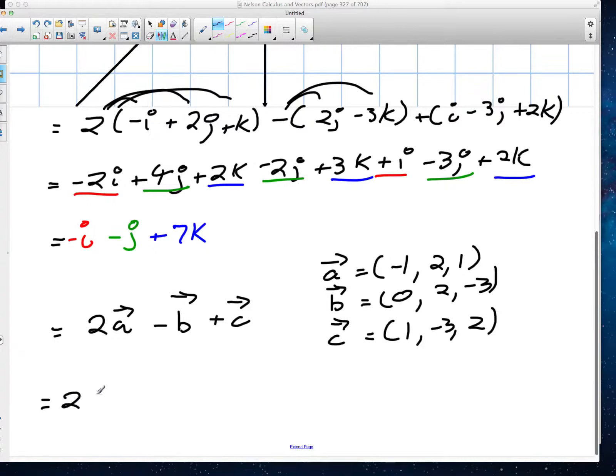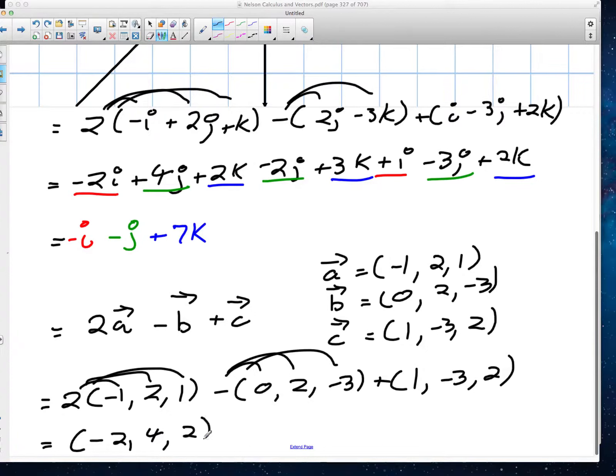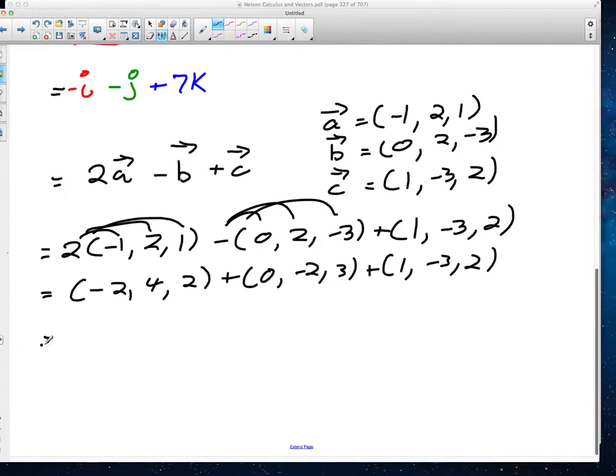So 2a, well we have a scalar of negative 1, 2, and 1. And we're subtracting 0, 2, negative 3. And then we're adding 1, negative 3, and 2. In this case, what we're going to be doing is we're going to be using our scalars to go across this. So we're going to distribute again the negative as well. So we now have negative 2, 4, 2, plus 0, negative 2, positive 3, plus 1, negative 3, and 2.